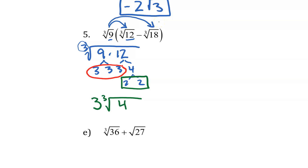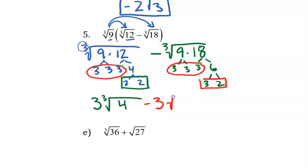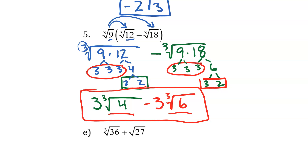Now the second part: cube root of 9 times negative cube root of 18, so this is minus the cube root of 9 times 18. Factoring: 9 is 3 times 3, and 18 is 3 times 6, and 6 is 3 times 2. I need 3 of a kind — I have three 3's. Take that out of the radical, and what's left inside is a 3 and a 2, so I get the cube root of 6. I have the cube root of 4 and the cube root of 6 — those are not like terms, so this is as far as I can go. That is the answer.